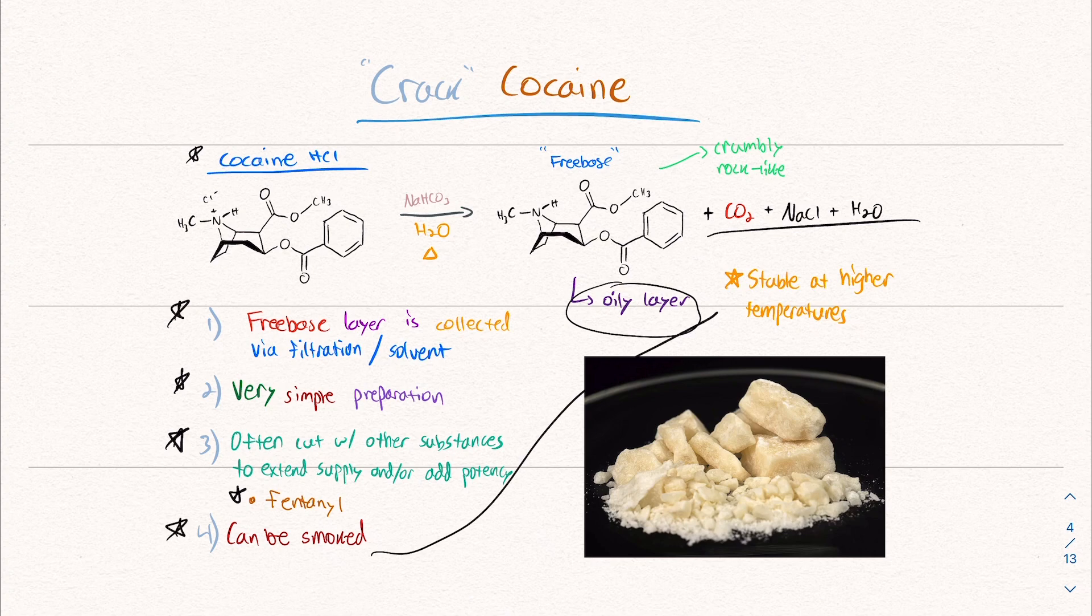So for it can be smoked. Why? Because this form, this new form is now stable at higher temperatures. The physical properties change. This is why crack cocaine is smoked because it's in a new form that can be consumed by smoking. And so you can see there's clear differences between the two products, at least in their physical properties. And you can see that it is crumbly and rock like. This is the form that it takes when you filter it and dry it.